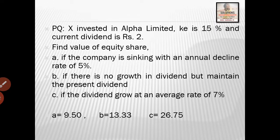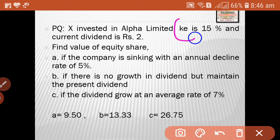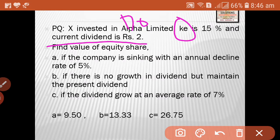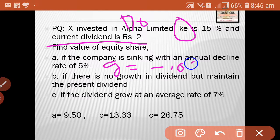Next question, also for you to calculate — X Limited invested in Alpha Limited. KE is 15% and the current dividend D0 is Rs. 2. Find the value of equity share in three cases: first, if the company is sinking with an annual decline rate of 5% (growth rate = -0.05); second, if there is no growth in dividend (growth rate = 0); third, if dividend grows at an average rate of 7% (growth rate = 0.07).